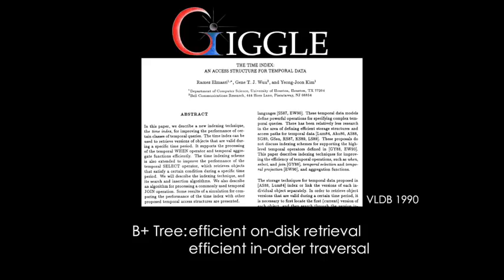Giggle was inspired by a paper from the 90s called the Time Index, which used a B+ tree to index temporal intervals. You can see the similarities between a single-dimensional chromosomal interval and a time interval. This paper introduced the idea of using a B+ tree because it had very efficient on-disk retrieval — our databases are much larger than would fit in RAM, so it's important to read from disk quickly — and it offered efficient in-order traversal.